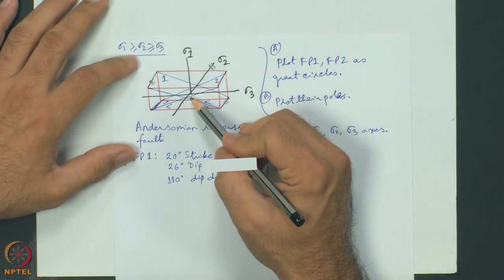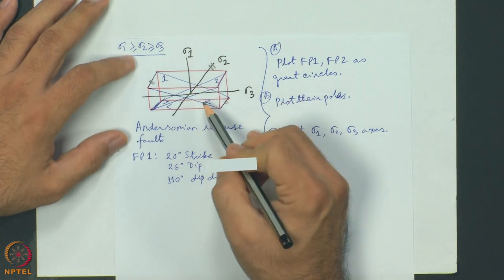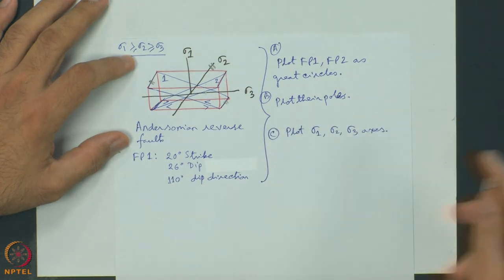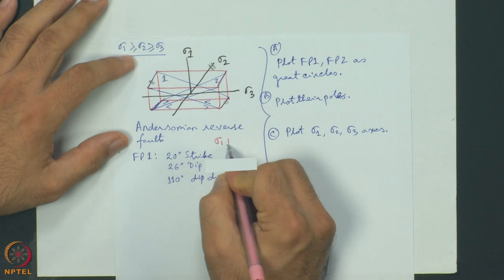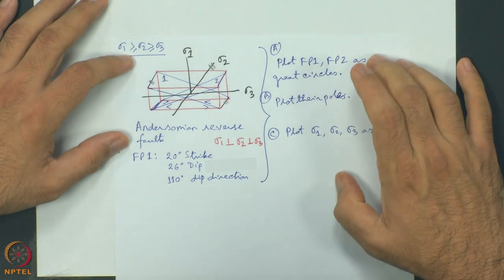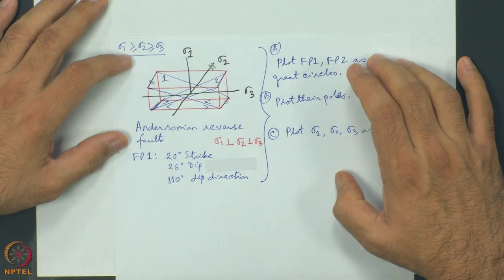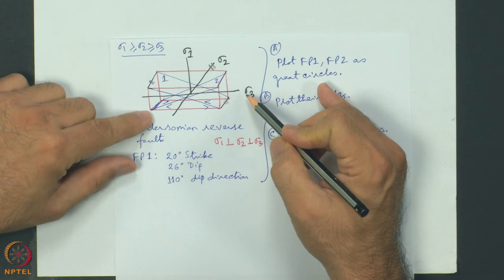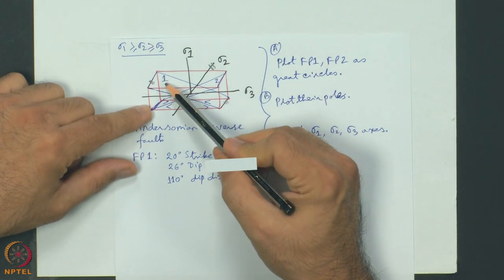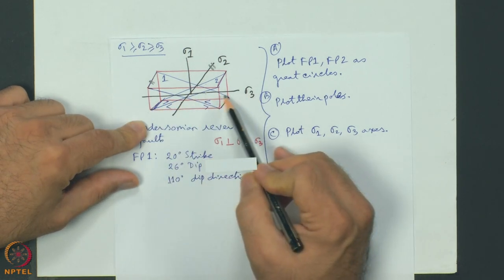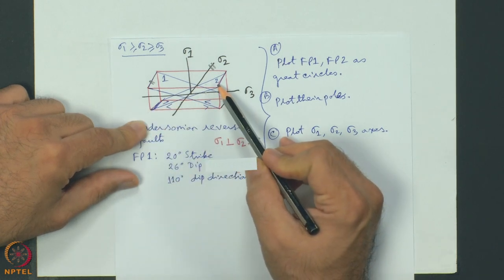The sigma 1 axis in this case is vertical and the sigma 3 axis is horizontal. Sigma 1 is perpendicular to sigma 2, and sigma 2 is perpendicular to sigma 3. Sigma 2 and sigma 3 axes are horizontal, and sigma 1 is vertical. The sigma 3 principal stress axis is along the dip direction of fault plane 1, and similarly along the dip direction of fault plane 2.